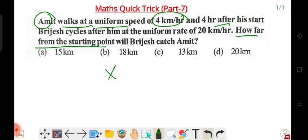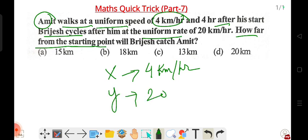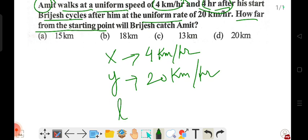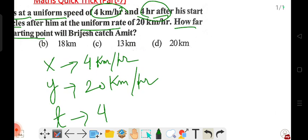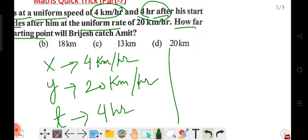Let's define variables. X is Amit's speed, which is four kilometer per hour. Y is Brijesh's uniform rate, which is 20 kilometer per hour. The time T is four hours later, when Brijesh starts his journey. So X is four kilometer, Y is 20 kilometer at uniform speed, and time is four hours.